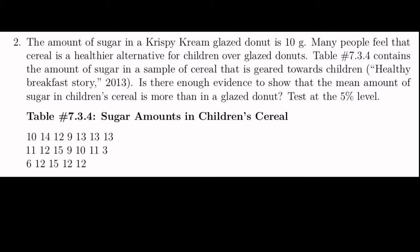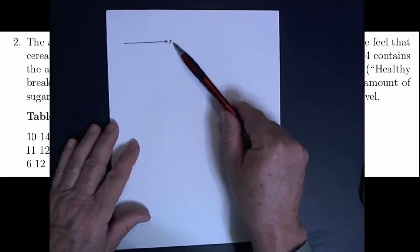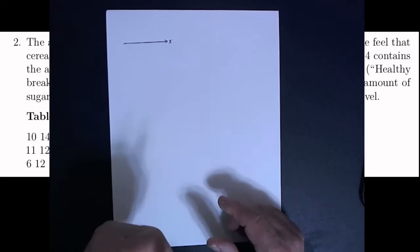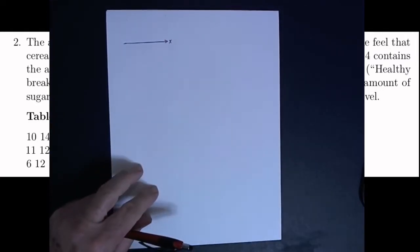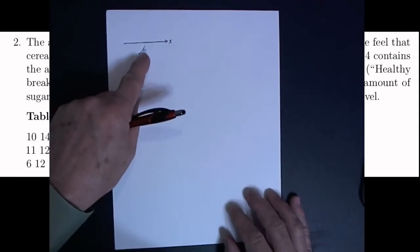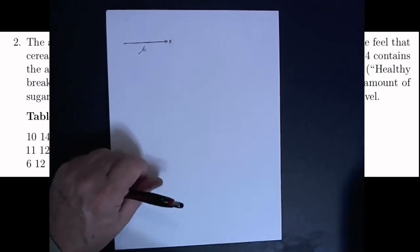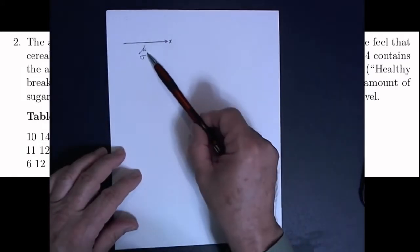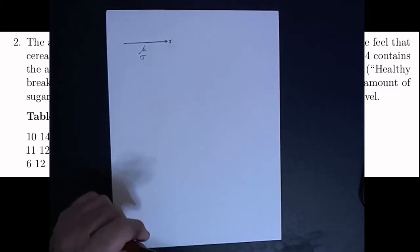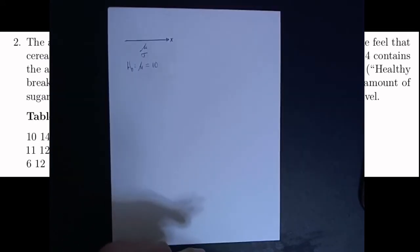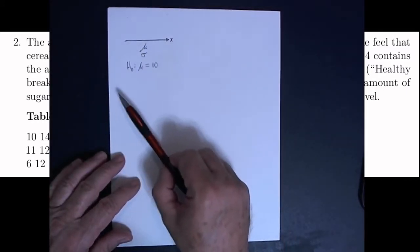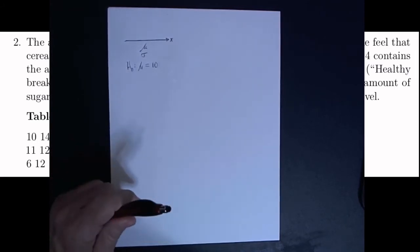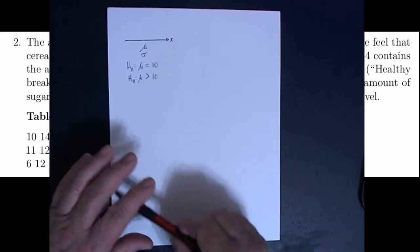Let's look at the problem one more time. We've got this data, which is the number of grams of sugar in a sample of children's cereal. The random variable x is measuring the number of grams of sugar in a serving of children's cereal. The null hypothesis says that the average number of grams is 10, the same as a glazed donut, and the alternative hypothesis says that it's greater than 10.